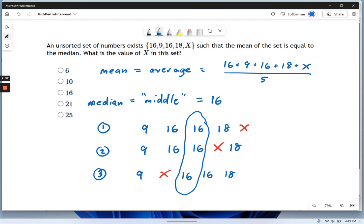Now that's important. We know that the median equals the mean in this set. So here's my equation: 16 plus 9 plus 16 plus 18 plus x, all divided by 5, equals 16.